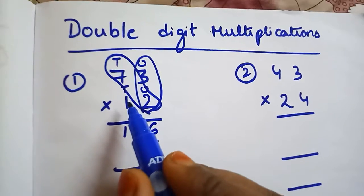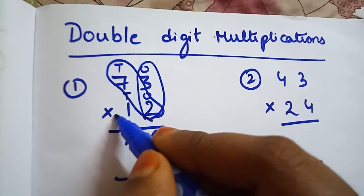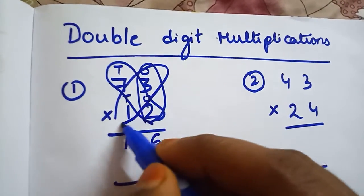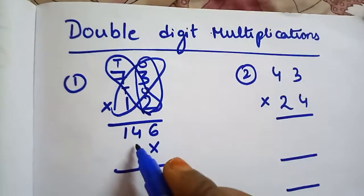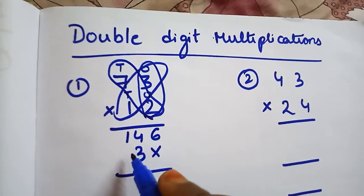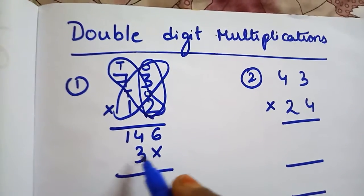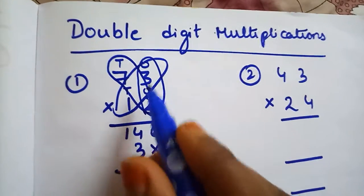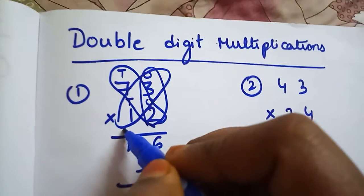Now go for tens place. First of all, multiply tens place with ones place. One times 3 is 3. See, before the cross I'm writing 3. Next, multiply tens place with tens place. One times 7 is 7.